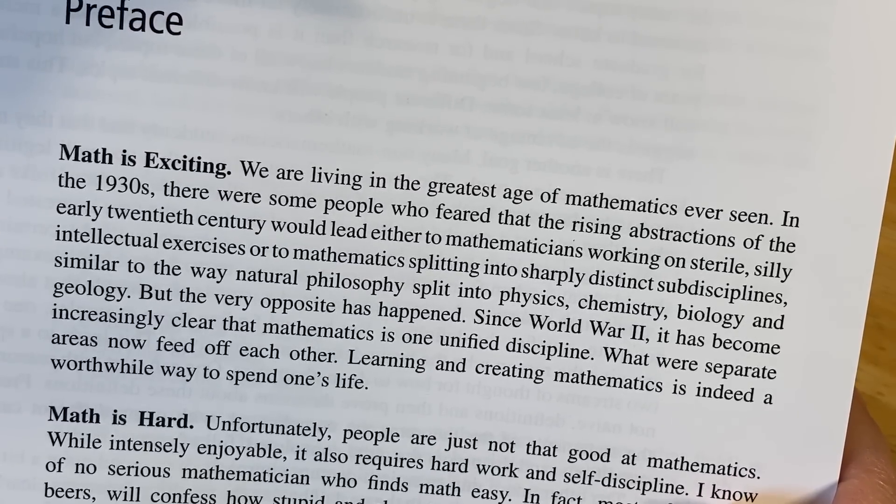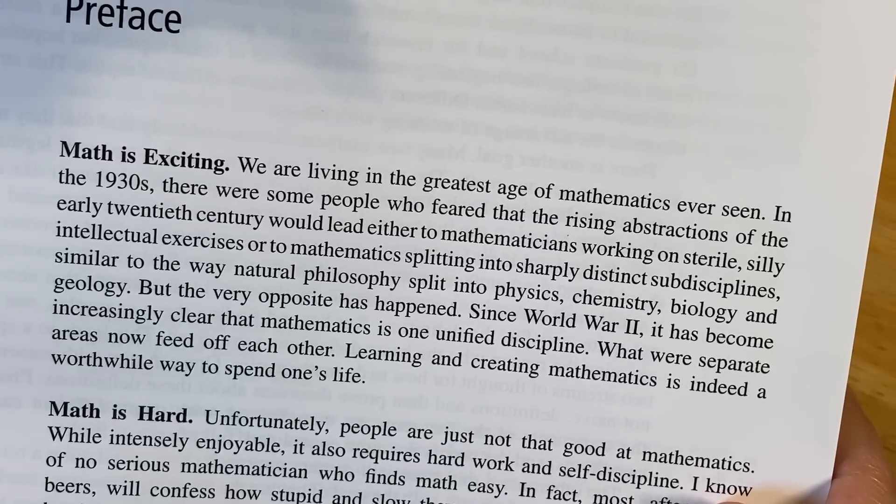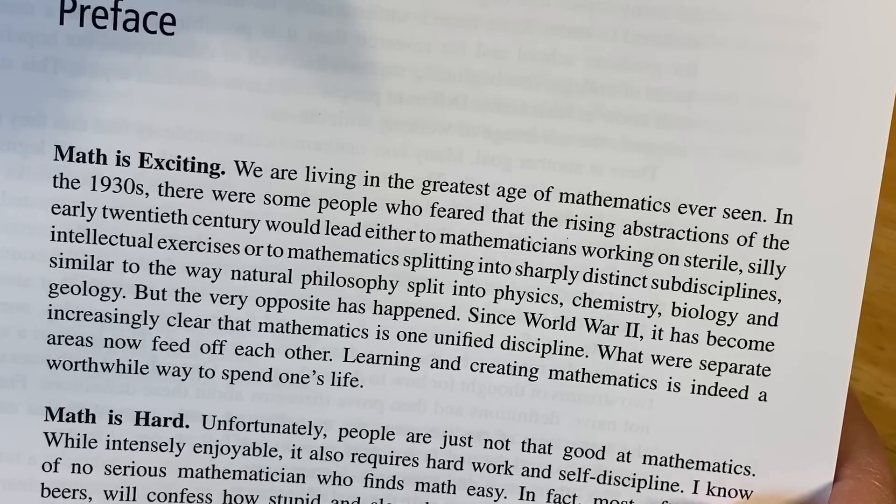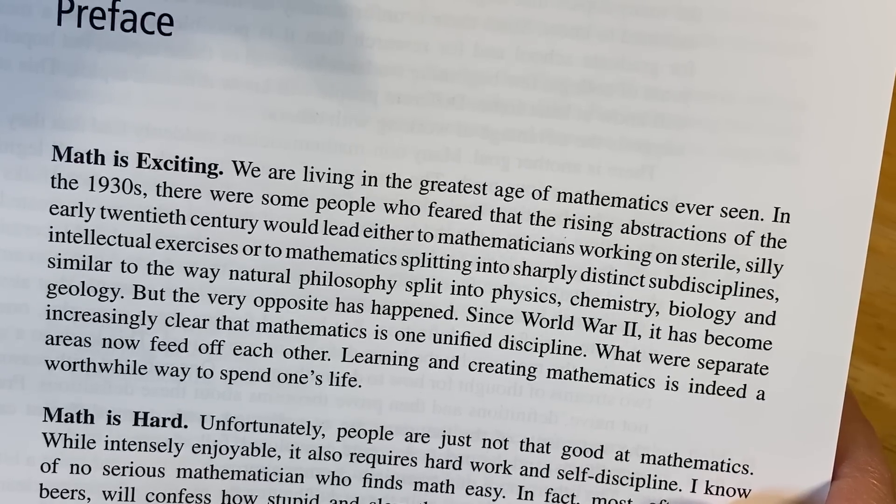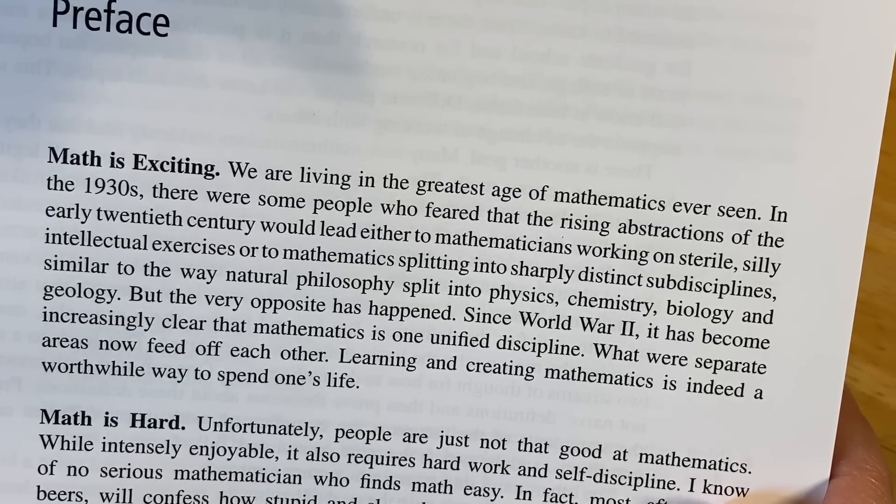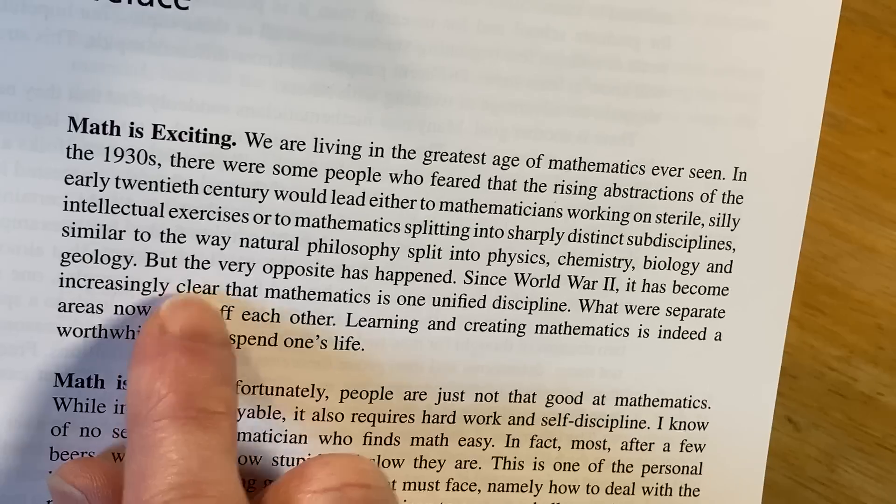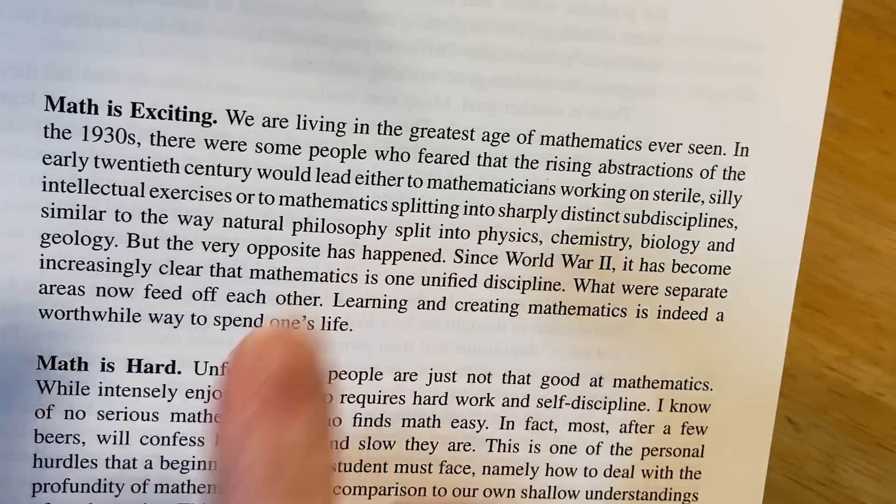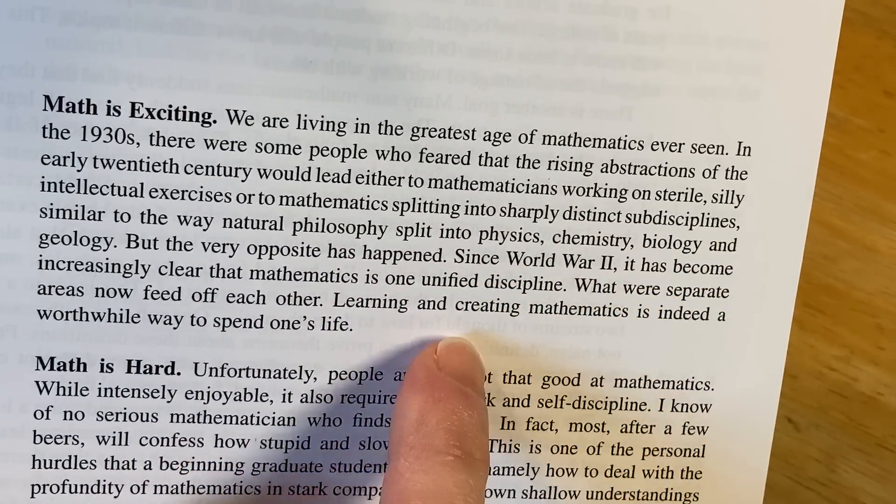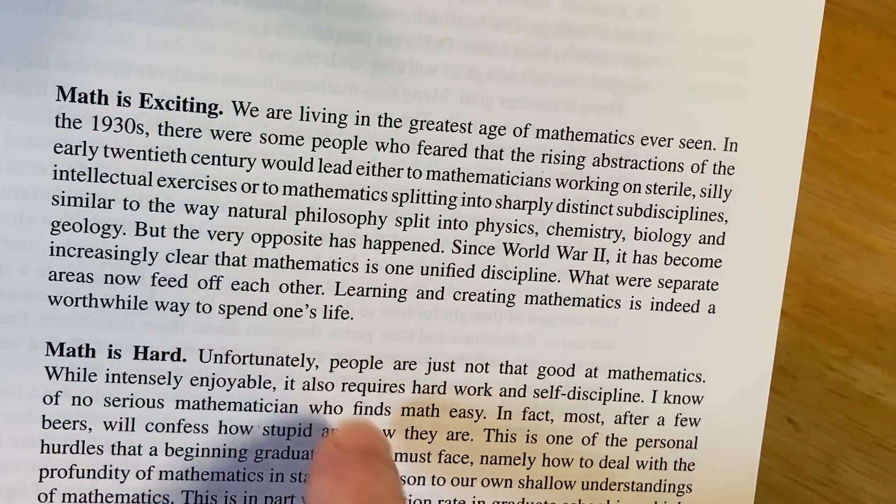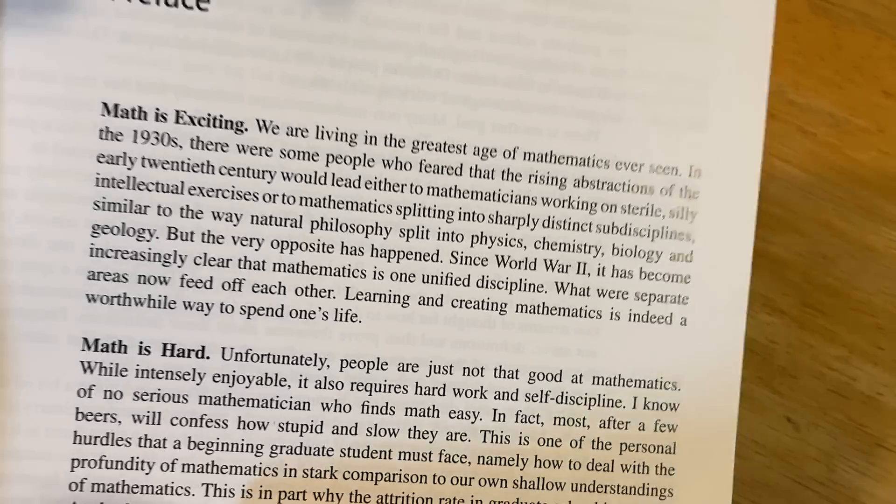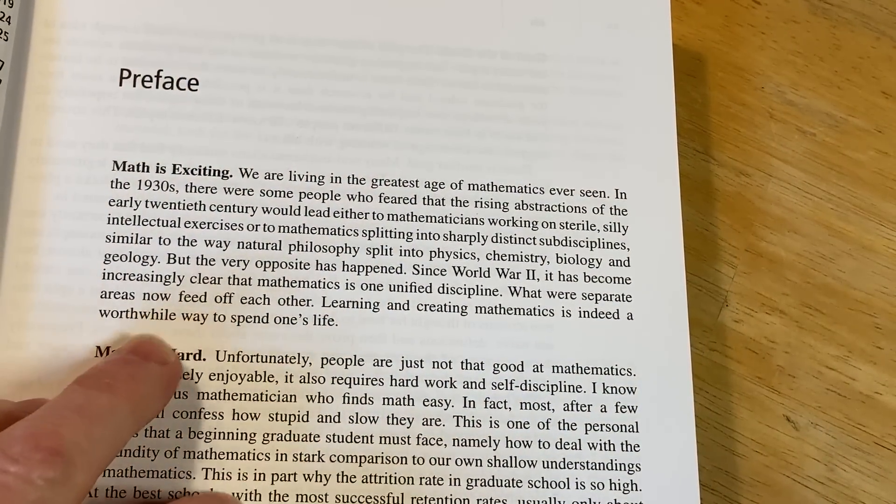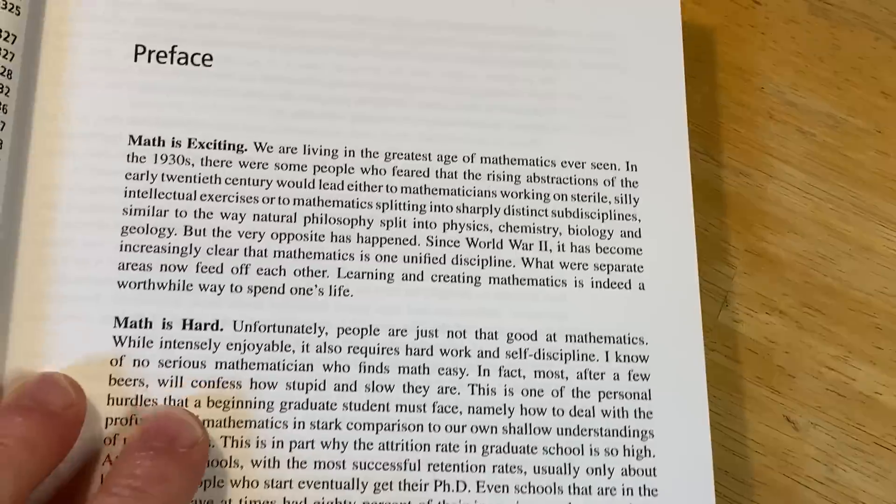We are living in the greatest age of mathematics ever seen. In the 1930s, there were some people who feared that the rising abstractions of the early 20th century would lead either to mathematicians working on sterile, silly intellectual exercises, or to mathematics splitting into sharply distinct sub-disciplines, similar to the way natural philosophy split into physics, chemistry, biology, and geology. But the very opposite has happened. Since World War II, it has become increasingly clear that mathematics is one unified discipline. What were separate areas now feed off each other. Learning and creating mathematics is indeed a worthwhile way to spend one's life.